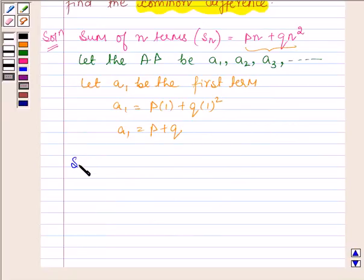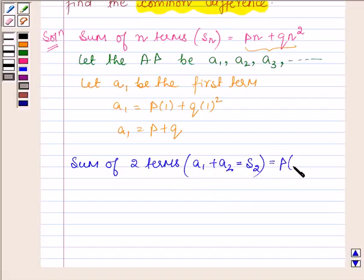Now let us find the sum of two terms. A1 plus A2, the sum S2, equals P times 2 plus Q times 2 square, which equals 2P plus 4Q.